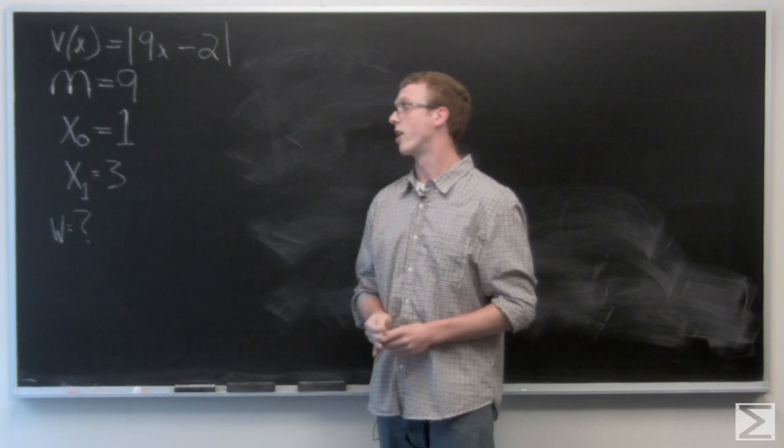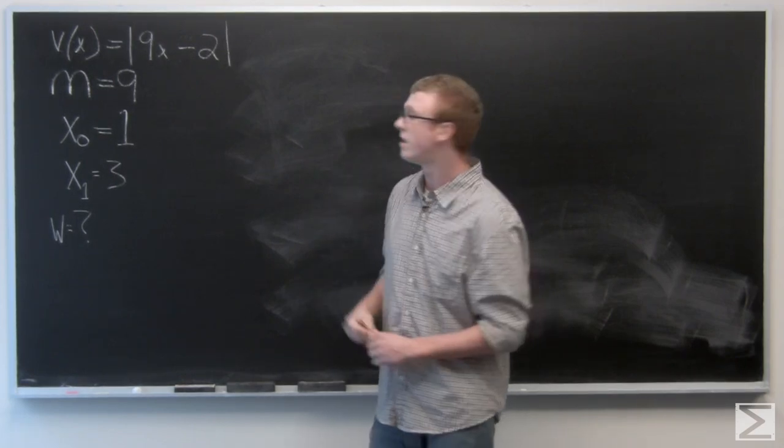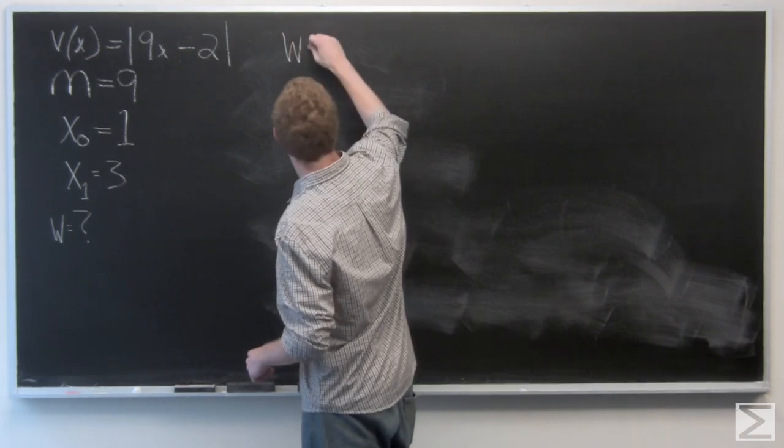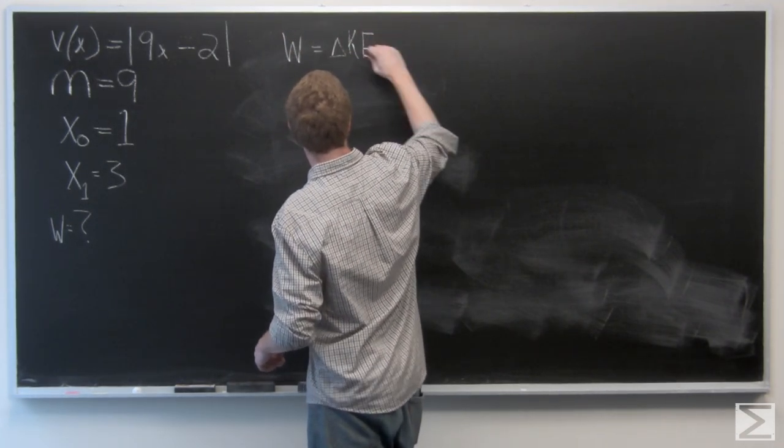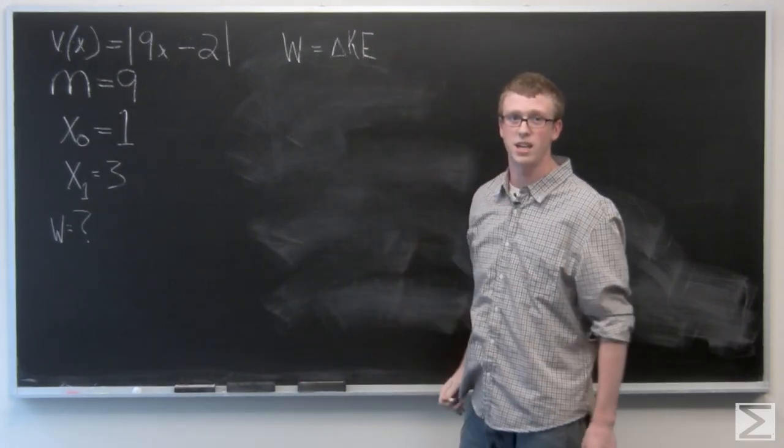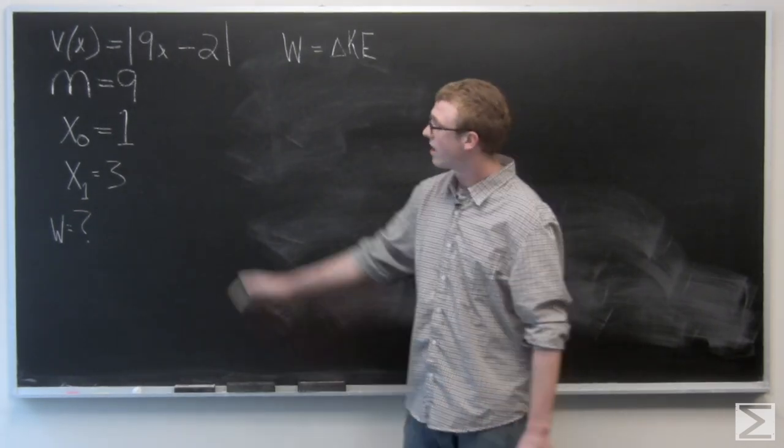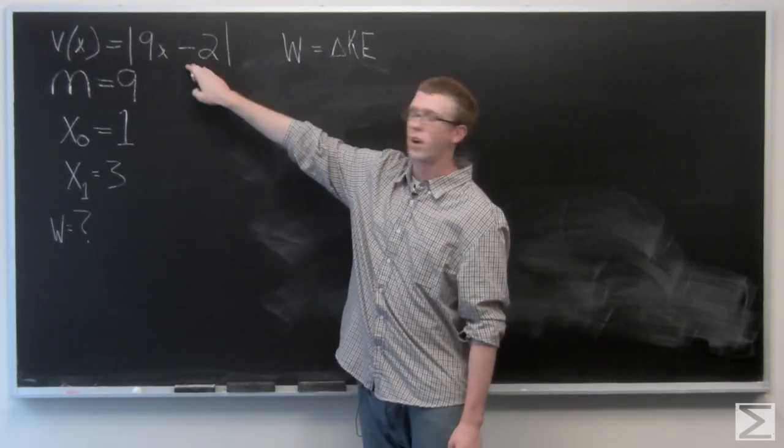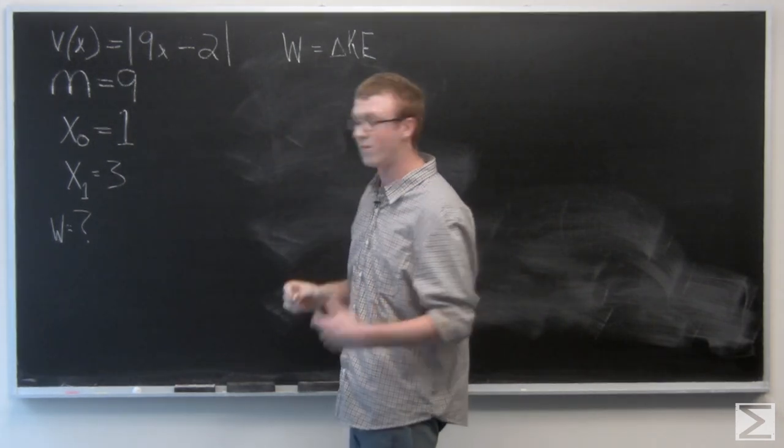Now we could do a long complicated work calculation, but work is really just the change in kinetic energy. Work is delta KE, and as we know from this section, we have a formula for kinetic energy in terms of velocity and mass: 1/2 mv².